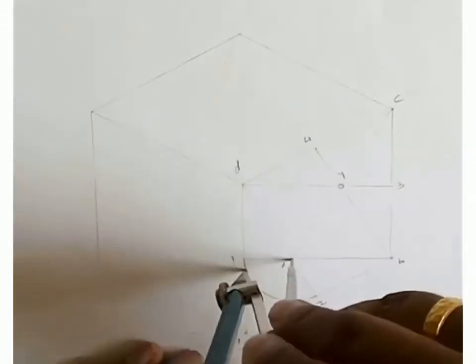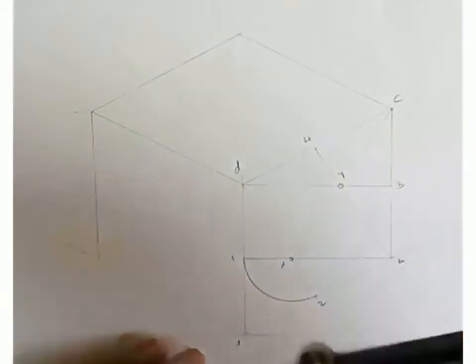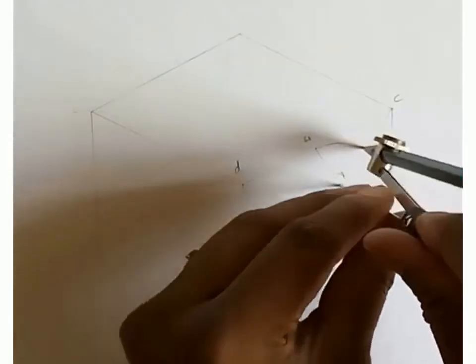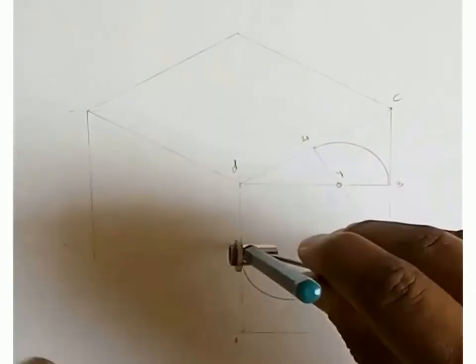Taking X1 radius and X as center, draw an arc 1 to 2. Similarly Y as center and Y4 as radius draw an arc 3 to 4.